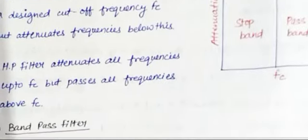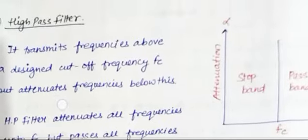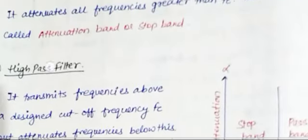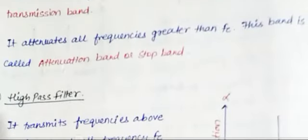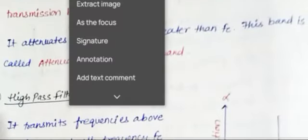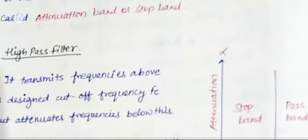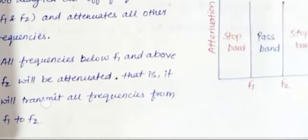What happens in the high pass filter? With the cut-off frequency, the upper signal is passed. This means it will stop the lower signal. The low signal is stopped, and the high signal is passed.